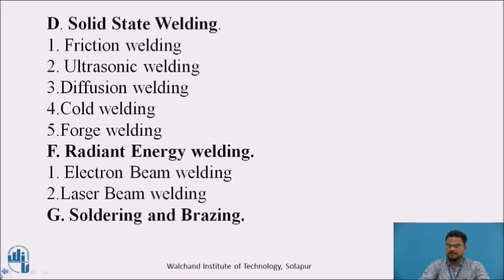The next type is thermal chemical welding. Under that, the subtypes are: thermite welding and atomic hydrogen welding. Then there is radiant energy welding, which includes electron beam welding and laser beam welding. The last type is soldering and brazing.